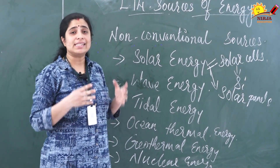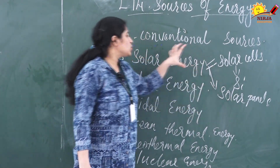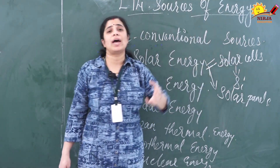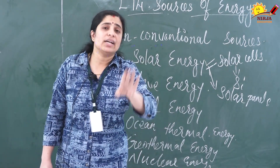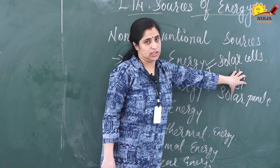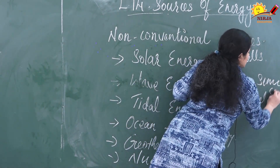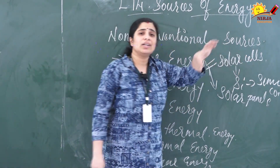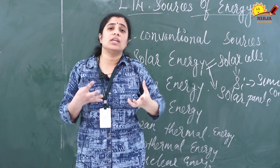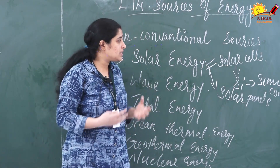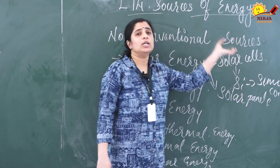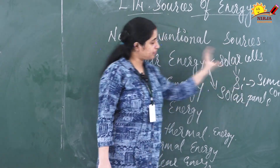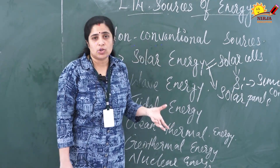Solar panels trap solar energy and convert it into electrical energy. Silicon is a semiconductor. What do we mean by semiconductor? At normal temperature, silicon does not conduct electricity. But when it traps solar energy it gains more energy — more heat — and it becomes a conductor. Then silicon starts conducting electricity. That is why we use silicon in solar panels.